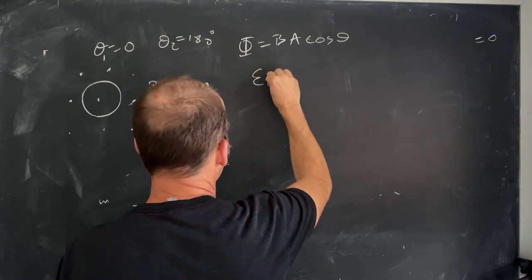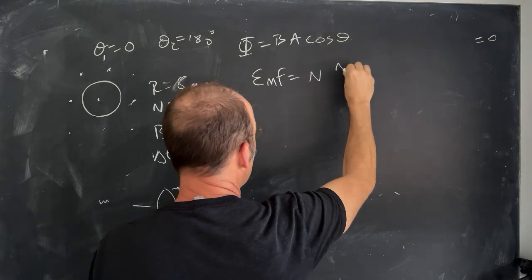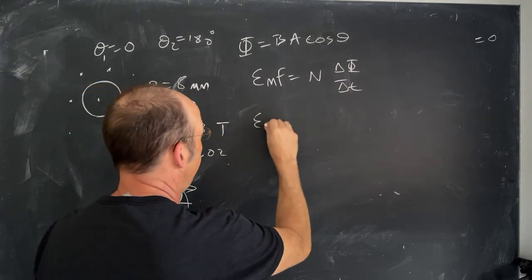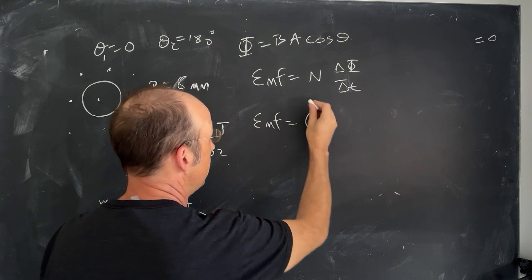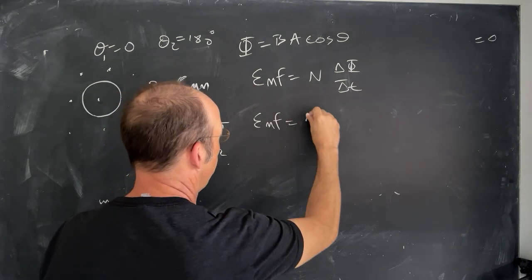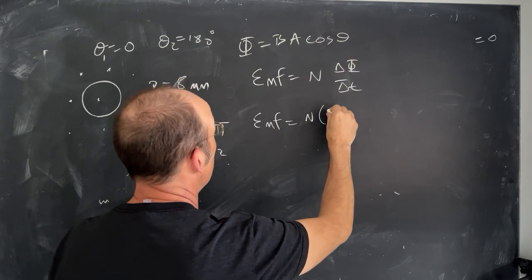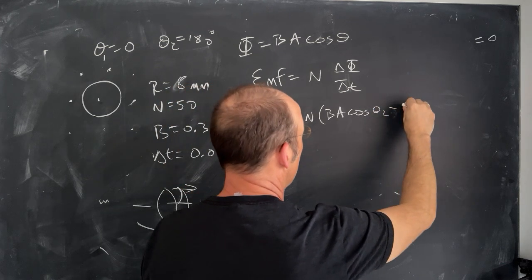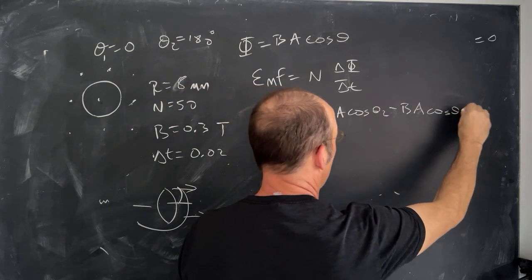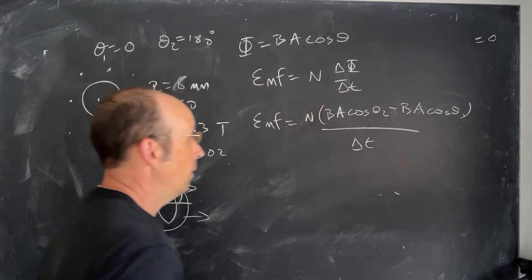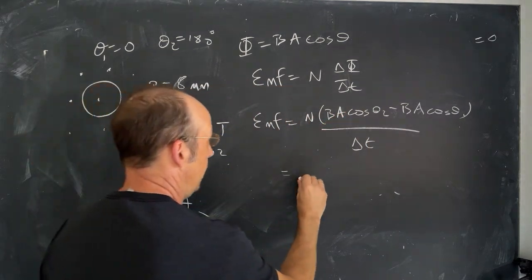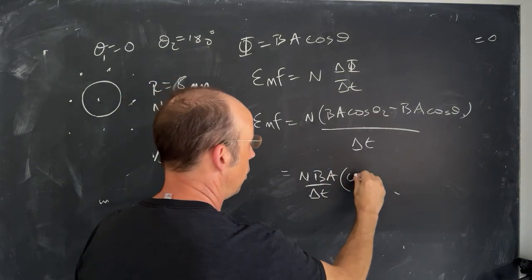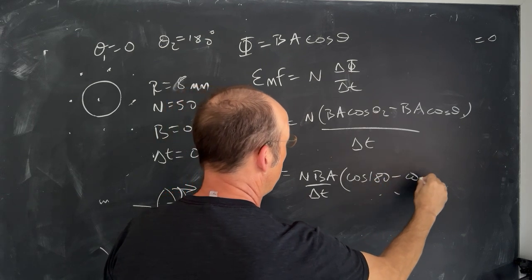So Faraday's law says that the EMF is equal to N times the change in flux with respect to time. So let's just plug in what we know. EMF is N, which is 50. And then my final flux phi 2 is going to be B A cosine theta 2 minus the initial flux B A cosine theta 1, all that over delta T. I can factor out a B and an A. I get N B A over delta T, and then cosine, this is going to be cosine of 180 minus cosine of 0.